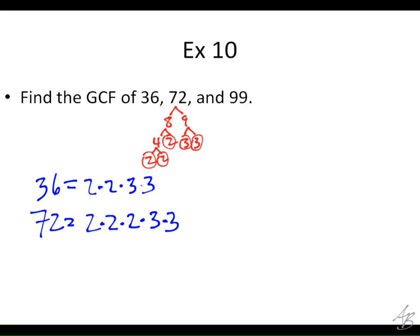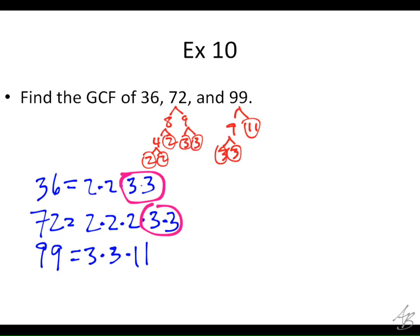And then 99: 99 would be 9 times 11, and 9 is 3 times 3. So 99 is going to be 3 times 3 times 11. Now, when we're finding the GCF of 3 numbers, the factor has to be in all of them. Can I circle the 2s? No — because 99 doesn't have a 2. They all have two 3s. Do they have anything else in common? No — you can't move factors around. So the GCF is 3 times 3, which is 9.